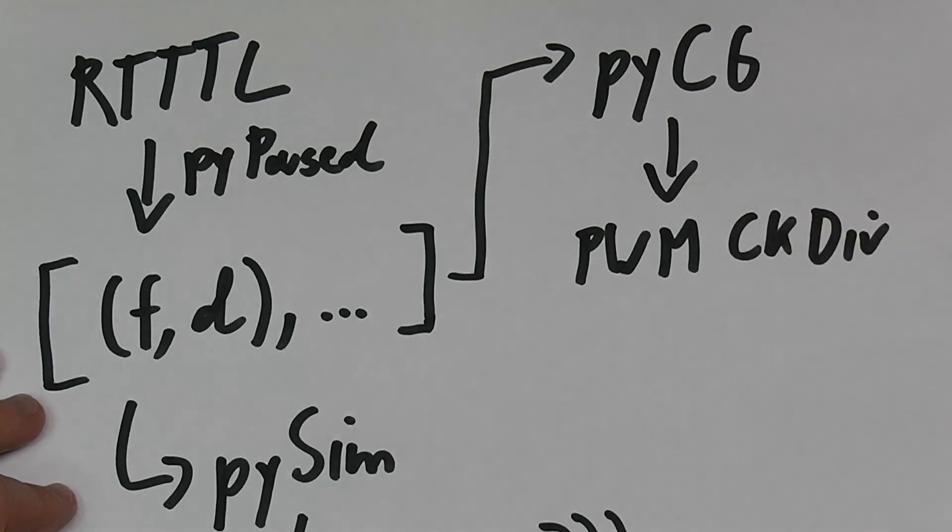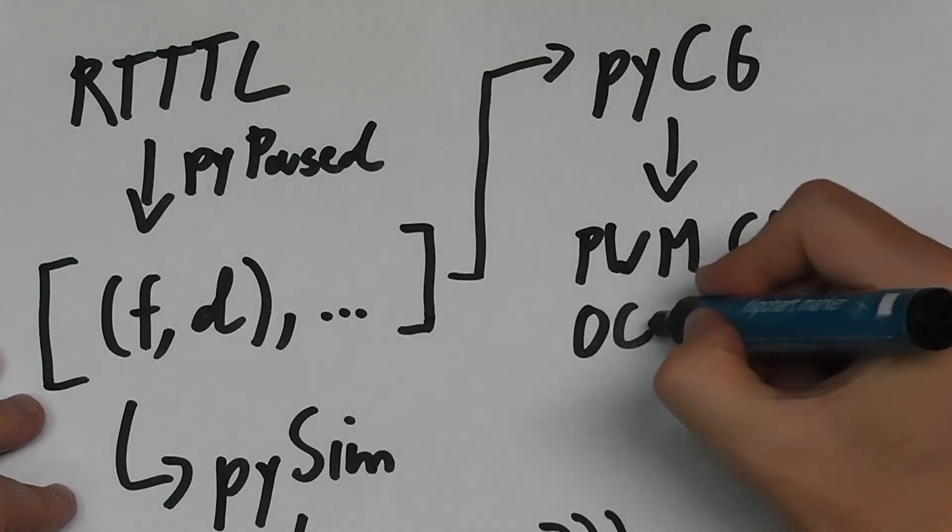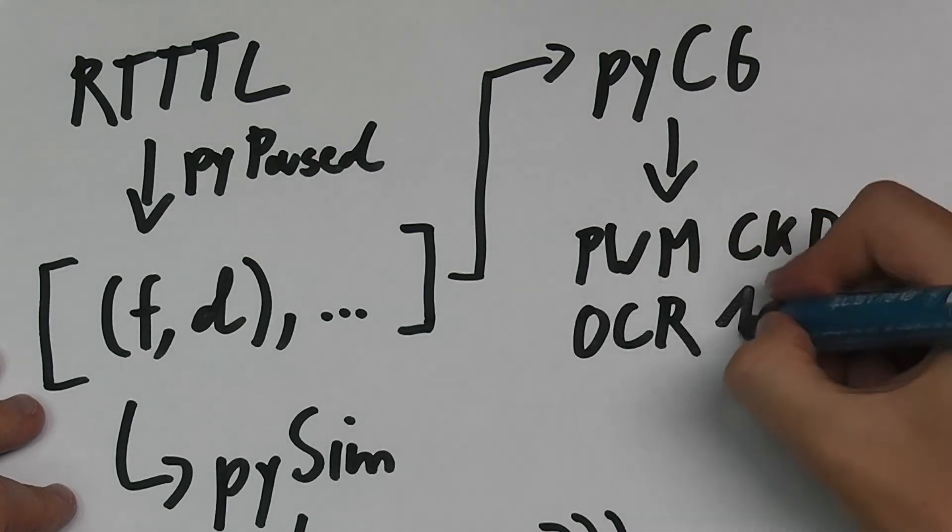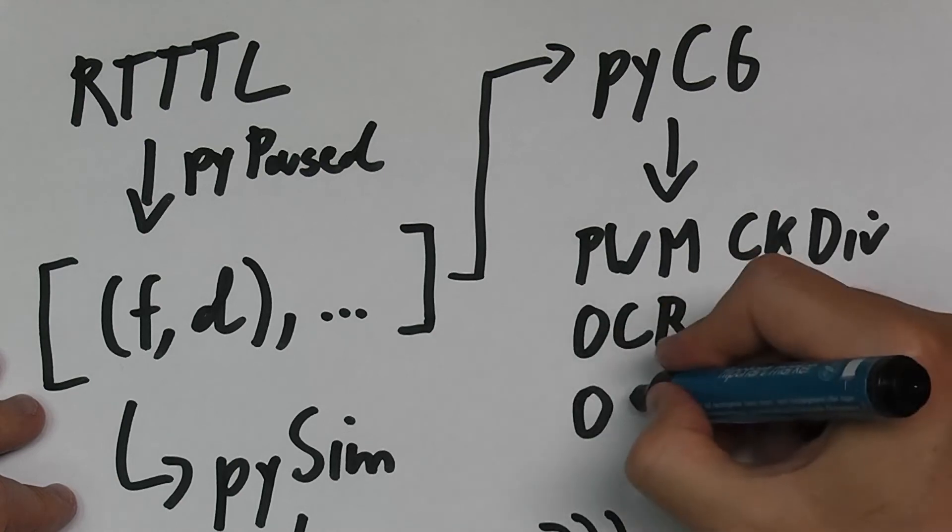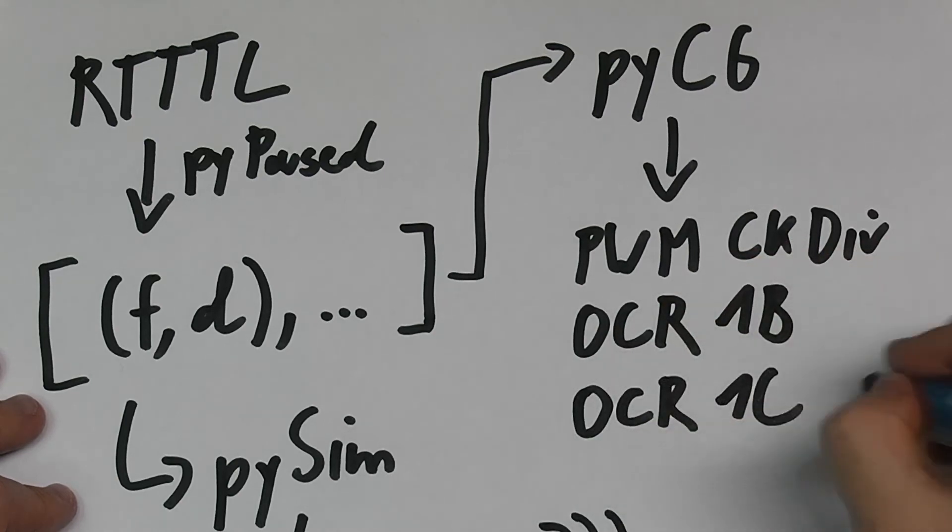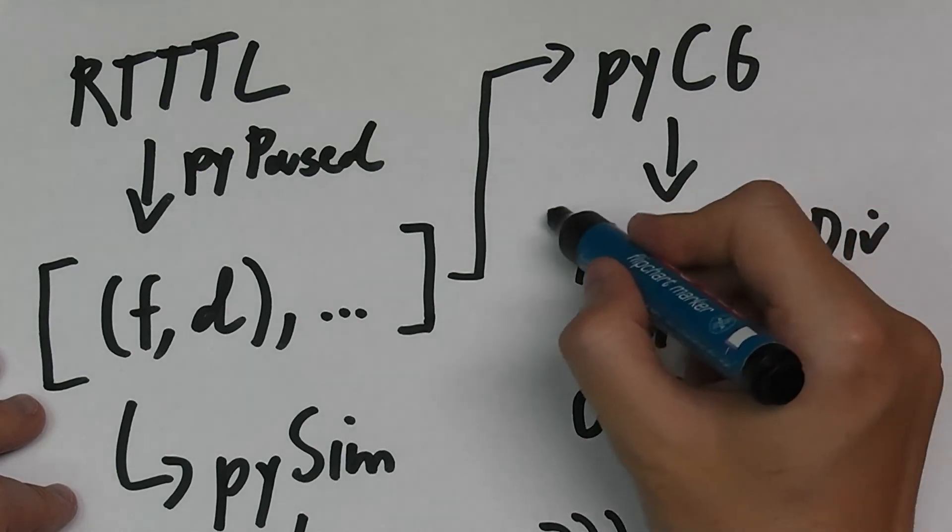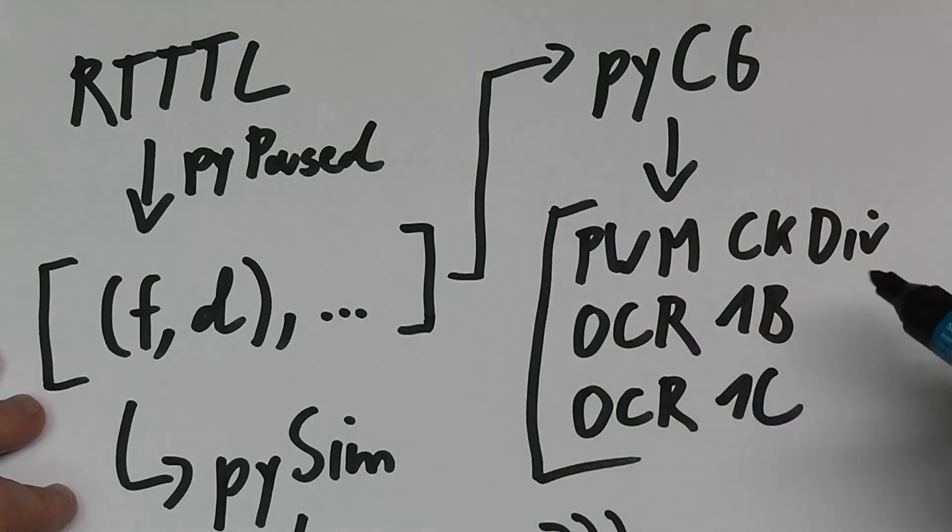That's the prescaler of timer 1 in my case. It sets the OCR1B register and the OCR1C register to hit the right note.